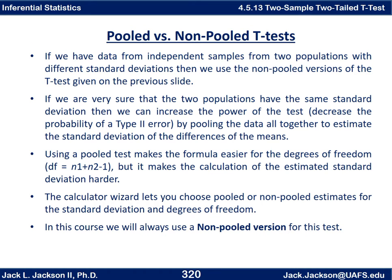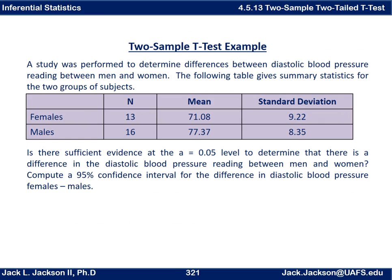If we have data from independent samples from two populations with different standard deviations, we have to use the non-pooled versions of the t-test. If we're very sure that the two populations have the same standard deviation, then we can increase the power of the test — in other words, decrease the probability of a type 2 error — by pooling all the data together. Using a pooled test makes the degrees of freedom formula easier (just n1 plus n2 minus 1), but makes estimating the standard deviation harder. In this course we'll always use the non-pooled versions, so when it comes to that choice, always just choose non-pooled.